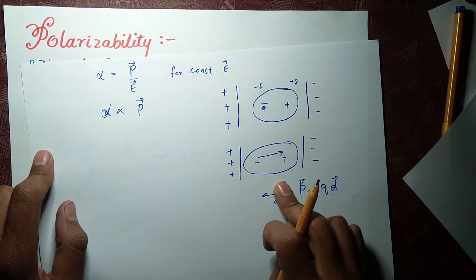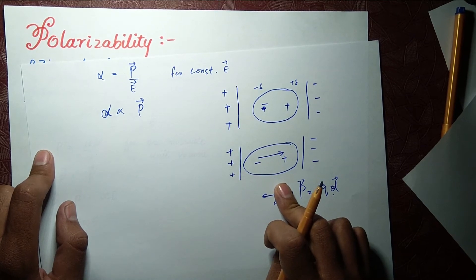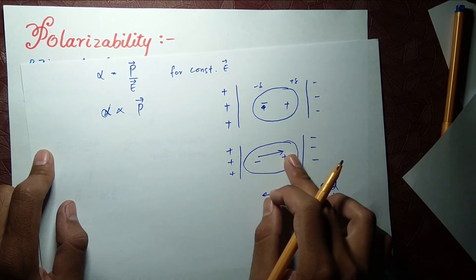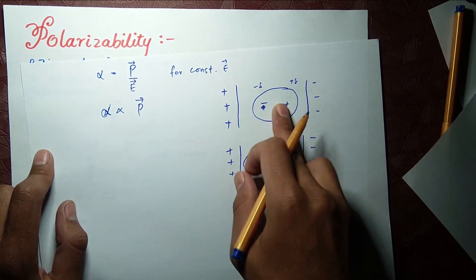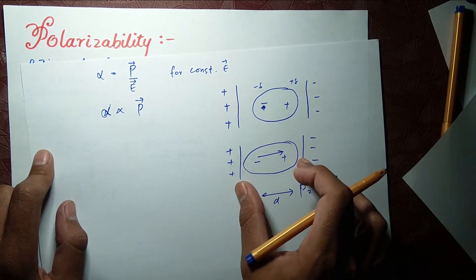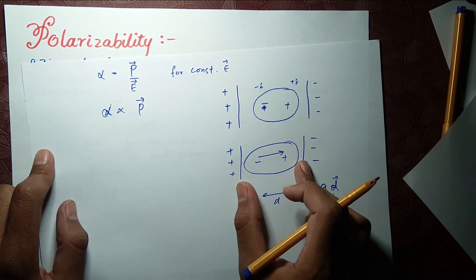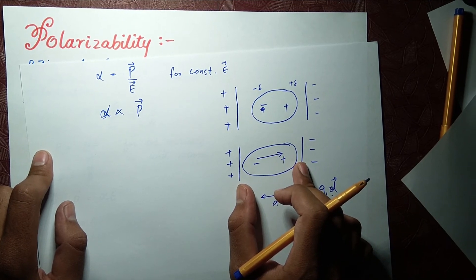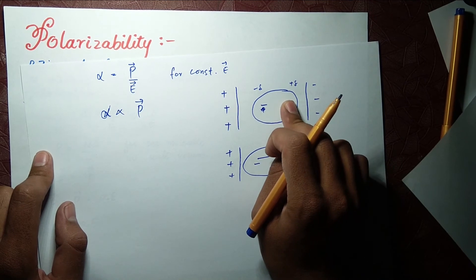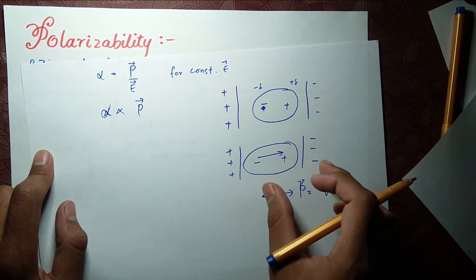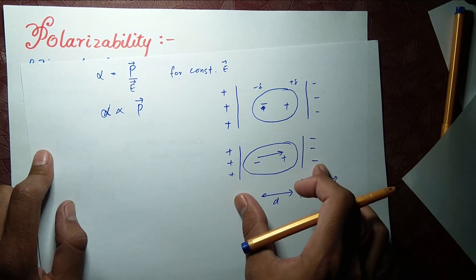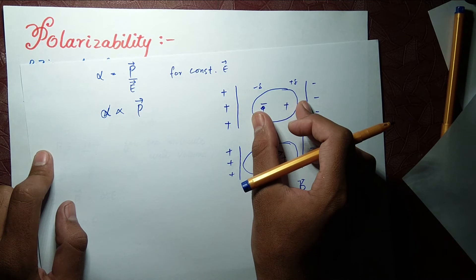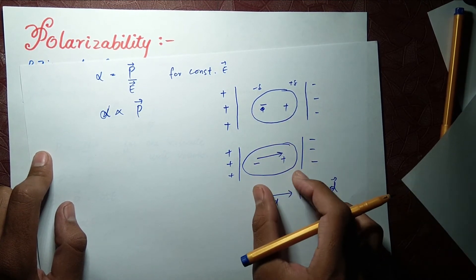Because this molecule has high polarizability, it forms a high polarization vector — its polarization vector will be large because it has a high dipole moment per unit volume, a greater dipole per unit volume than the other. So alpha is responsible for determining that, when a constant electric field is applied, which dipole will be stronger and will have greater values than the other.